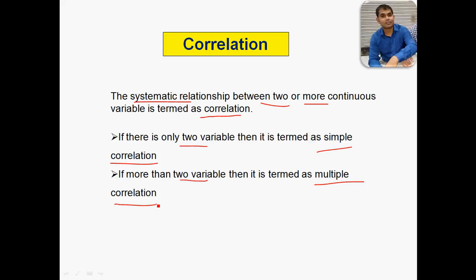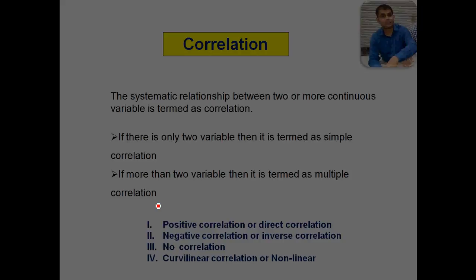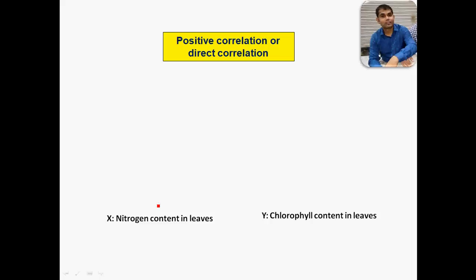How the correlation is behaving — either positively or negatively — on the basis of that we can see the correlation may be positive, also called direct correlation, or it can be negative correlation or inverse correlation. Third will be no correlation, and fourth will be either curvilinear or nonlinear correlation.